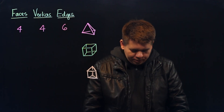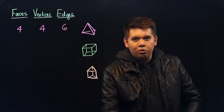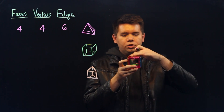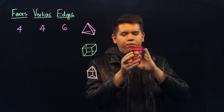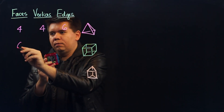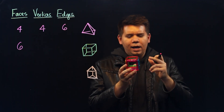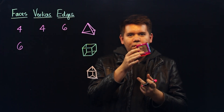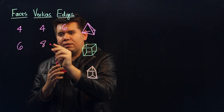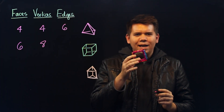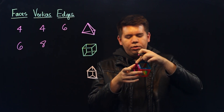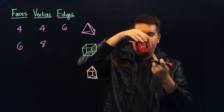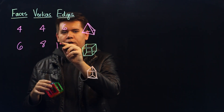How about for the cube? If we look at the cube, we see it comprises 6 faces: 1 on top, 1 on bottom, and 4 along the sides. How many vertices or corners does it have? 1, 2, 3, 4 on top, and 4 more on bottom for a total of 8. How many edges are in this cube? 1, 2, 3, 4 on top, 4 coming down, and 4 on bottom for a total of 12.